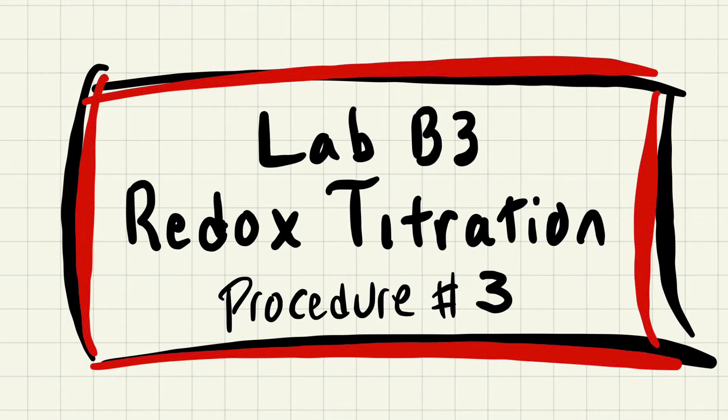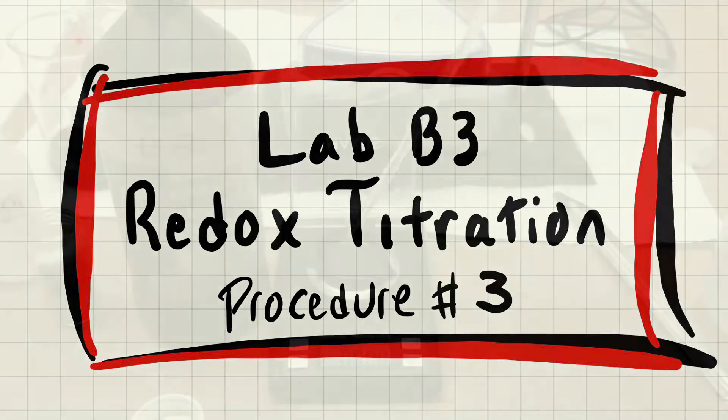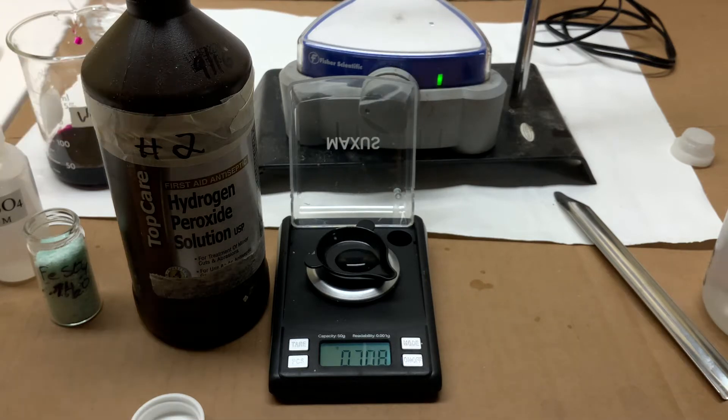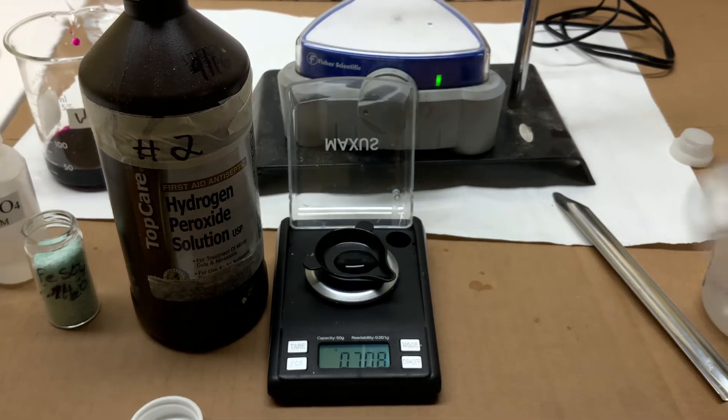Procedure 3: analysis of hydrogen peroxide. Be sure and record the mass of the hydrogen peroxide, which is 3%, or so the label says.